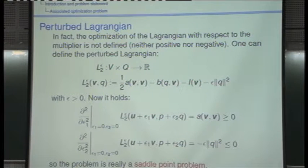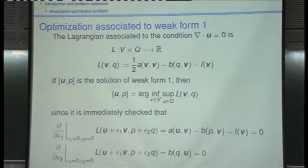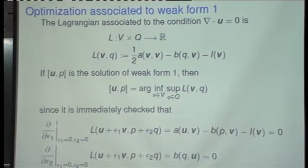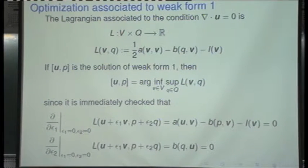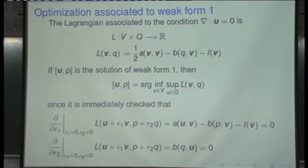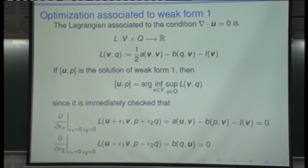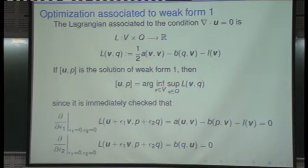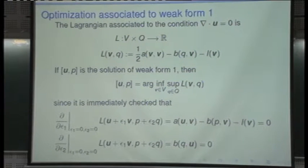There is another possibility which is similar but not equal, and that is very useful. If you consider the Lagrangian — the original functional enlarged with the restriction through a Lagrange multiplier — that Lagrangian is not definite. The equations that optimize that Lagrangian are the original Stokes equations: a(u,v) minus b(p,v) equals l(v), and b(q,u) equals zero. But I said the solution is not a minimum — it is a minimum in u and a maximum in p. I didn't check that, but I'll do it now.